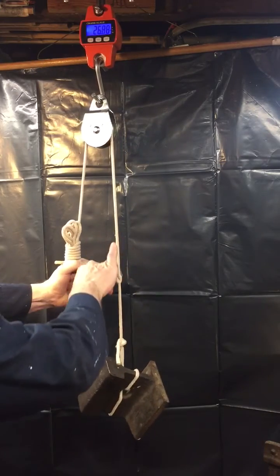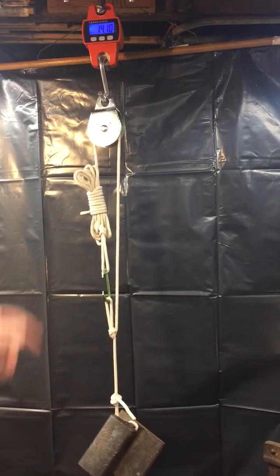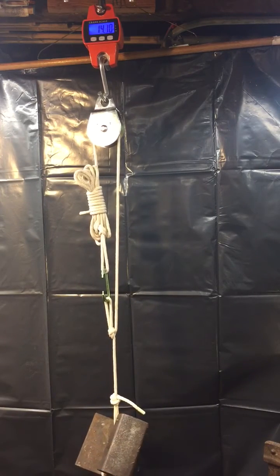Again, I will hook up the carabiner to the loop so you can see. When I let go, put everything on one track, goes back to 14 pounds, just over 14 pounds.